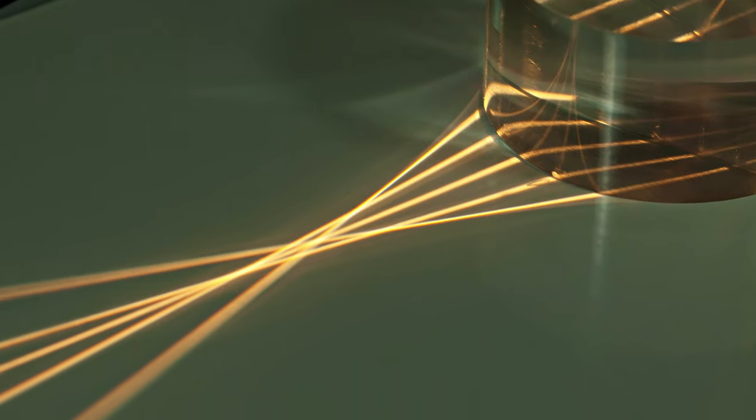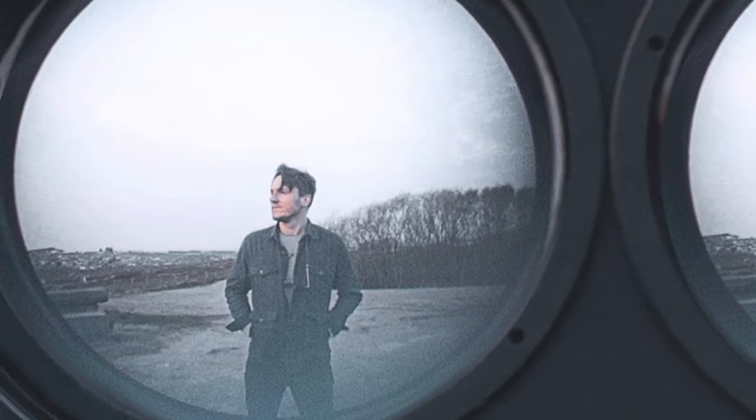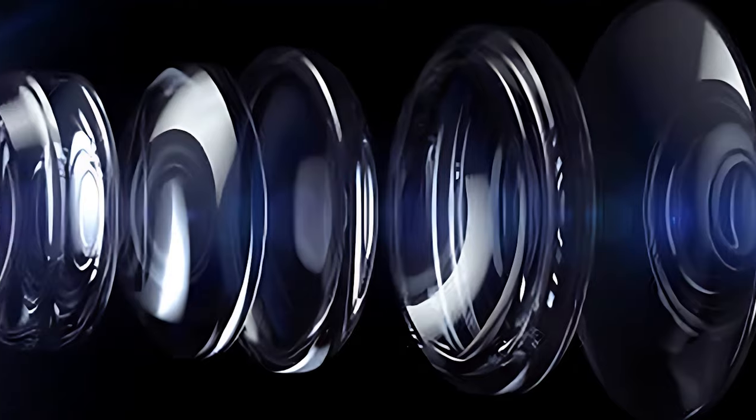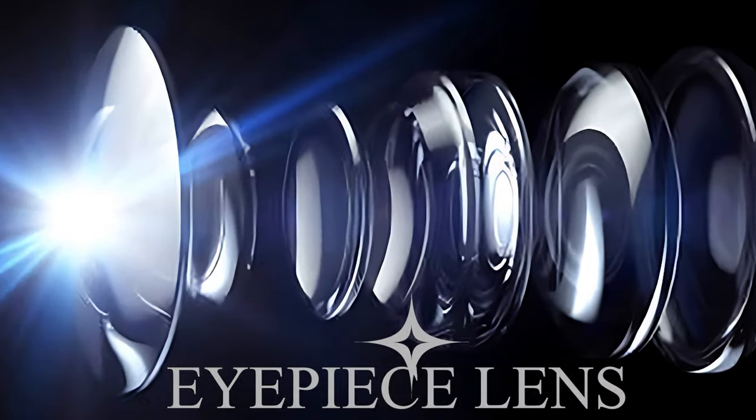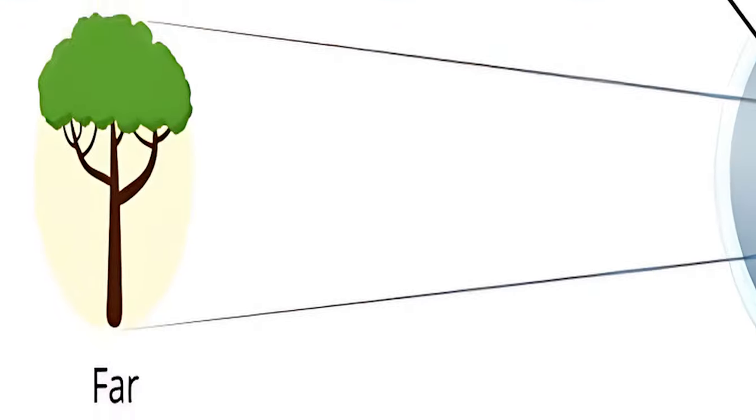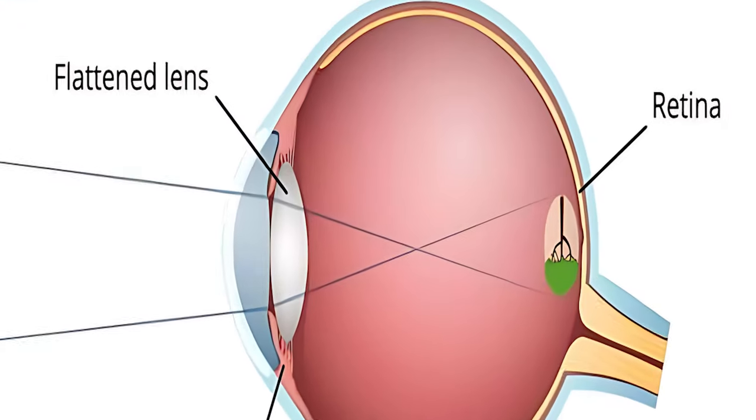These converging rays carry the image of the celestial object, and to make it accessible to our eyes, we introduce an eyepiece lens. This lens takes the diverging light rays and straightens them out, thus creating a magnified image on our retina.